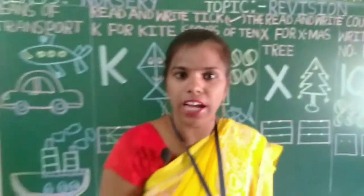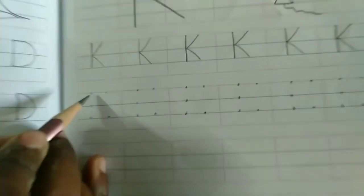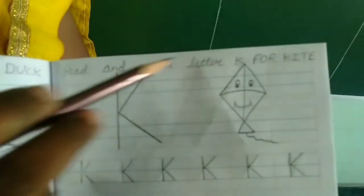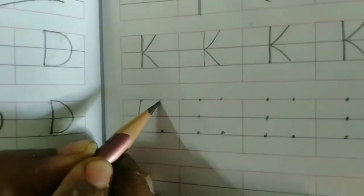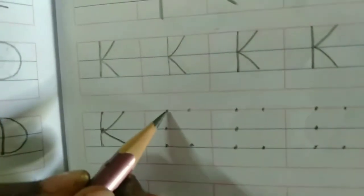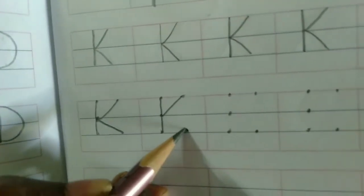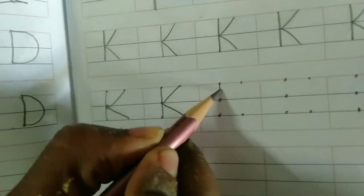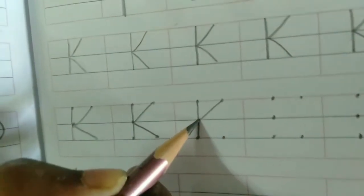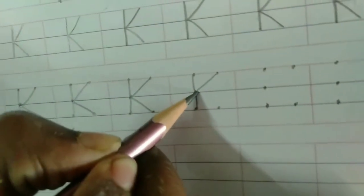Now we will see how to write K for kite in our four-line book. Look here — tell mama to make this pattern and you have to write with the help of the dots. Red to blue standing line, slanting line, one more slanting line — K for kite. Join the dots. K for kite. You have to complete the full page in this way.